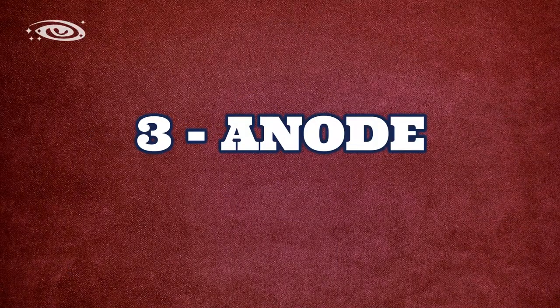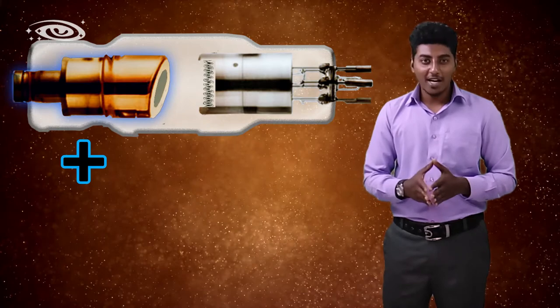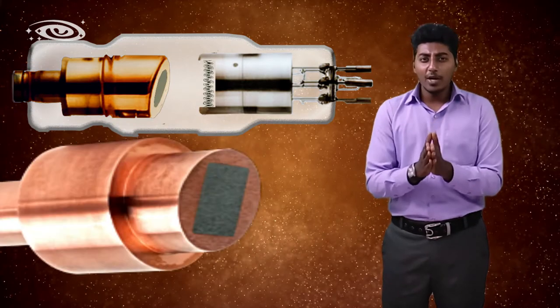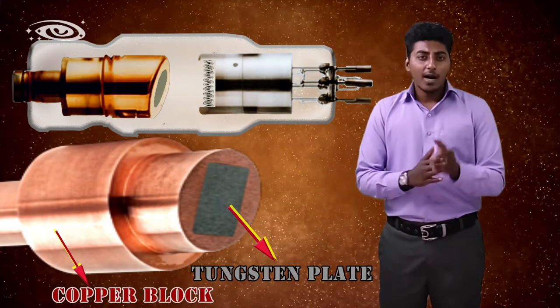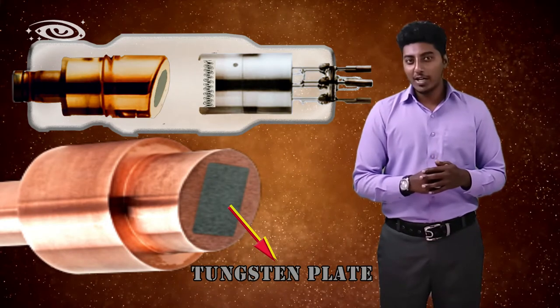At last we will see about the anode. Anode is the positive side of the x-ray tube and is made up of two major parts: the tungsten plate and copper block. The tungsten plate is used as a target metal to produce efficient x-rays.